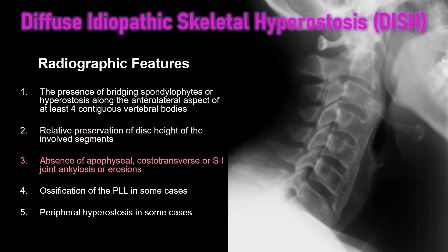There is a specific absence of involvement of the facet articulations or apophysial joints, the costotransverse joints, and also the sacroiliac articulations. Unlike seronegative spondyloarthropathies like ankylosing spondylitis, which favor these locations, DISH does not involve them.